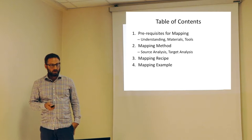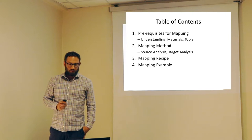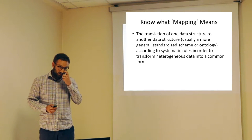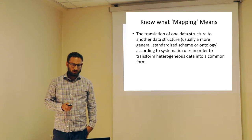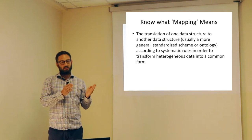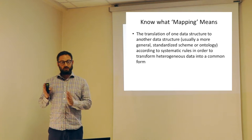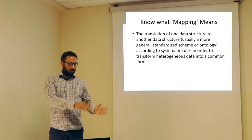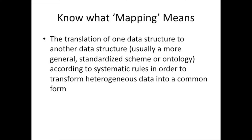Let's start by looking at mapping prerequisites. The first thing would be to know what mapping means. Mapping doesn't have anything to do with maps of the world. We're talking about doing a translation from one data structure to another data structure, and usually that translation means you're translating from a particular data structure to a more general, more standardized data structure. It could be just a standard schema or it could be a full-on ontology. This translation provides systematic rules to transform data held in your source data structure and re-express it in the schema format of the target data structure — in our case, an ontology.